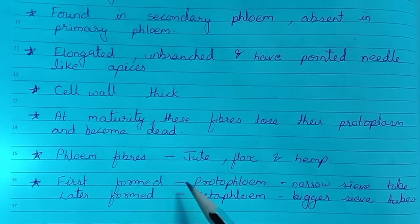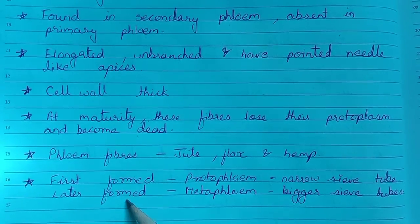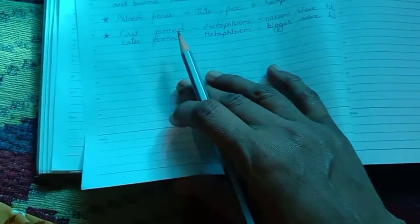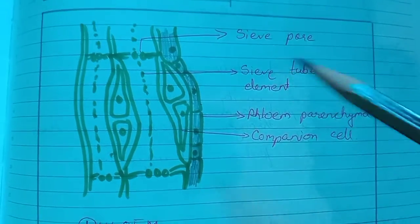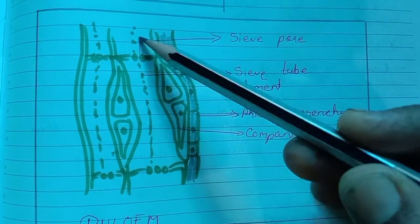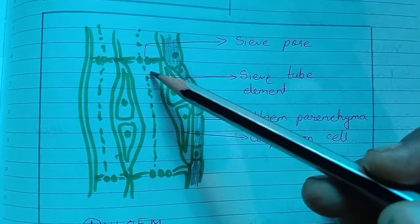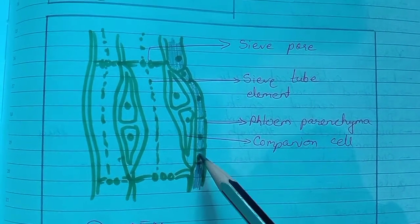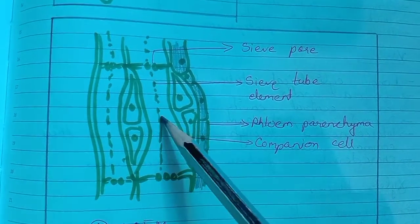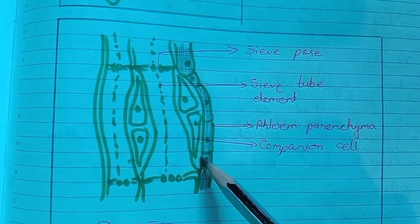The first-formed phloem is protophloem, which consists of narrow sieve tubes. The later-formed phloem is metaphloem, which has bigger sieve tubes. Looking at the structure of phloem in the diagram: the sieve pore and sieve tube elements have perforations on the end plates forming the sieve pore. The phloem parenchyma and companion cell are always attached with the sieve tubes.